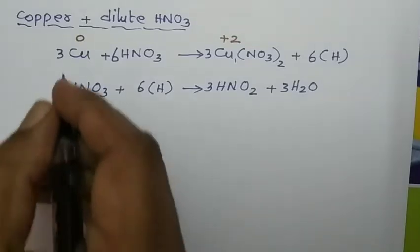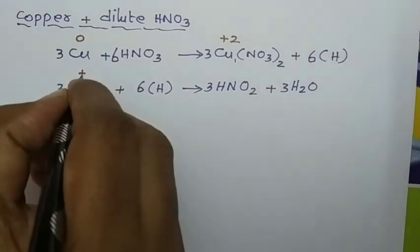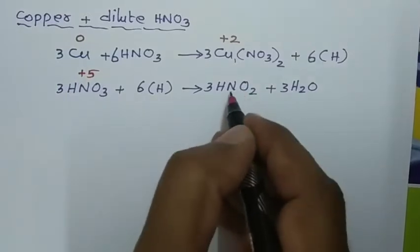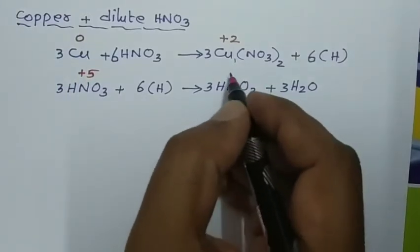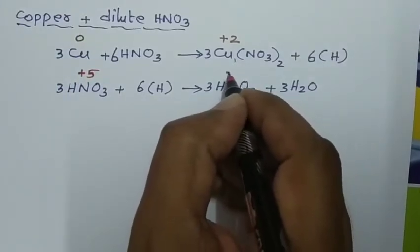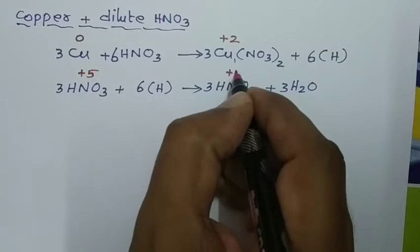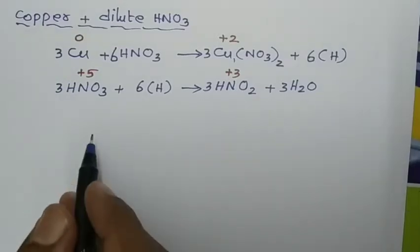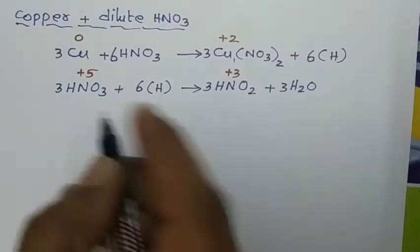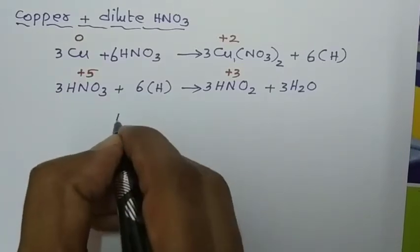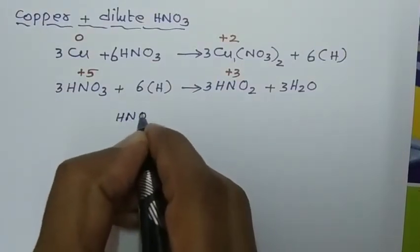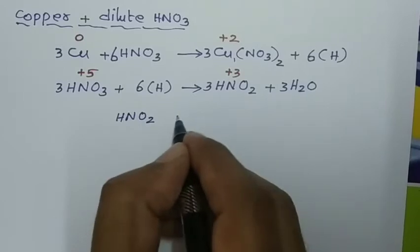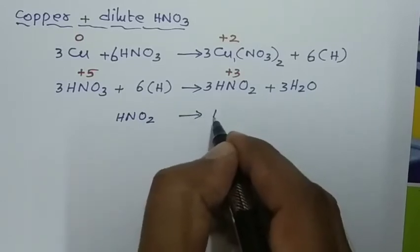In nitric acid, the oxidation state of nitrogen is +5, and in nitrous acid the oxidation state is +3. Moving from left to right, the oxidation number of nitrogen decreases, so this is called reduction. In the tertiary reaction, 3 molecules of nitrous acid (HNO₂) undergo decomposition.